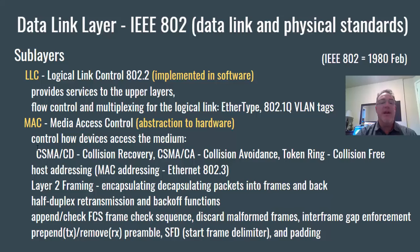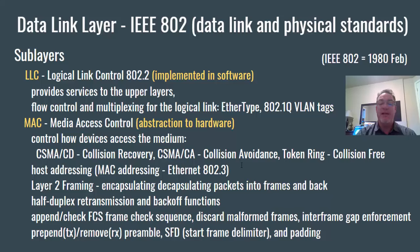At the lower sub-layer, we have the MAC sub-layer — the media access control sub-layer — which abstracts to the hardware NIC. The MAC sub-layer controls how devices access the medium. CSMA/CD, or collision detection, was designed to handle collisions on the wire in half duplex. CSMA/CA, collision avoidance, is used for wireless Ethernet. And then there's token ring, another technology which was collision-free — you had to have the token to get on the wire.